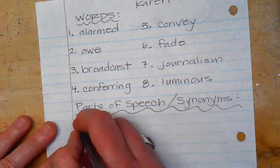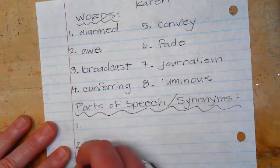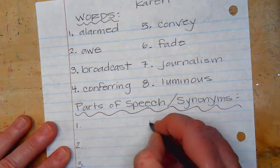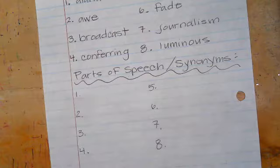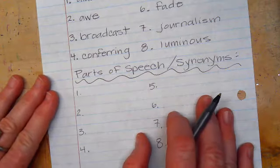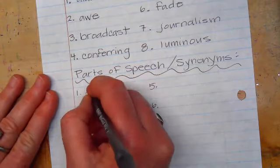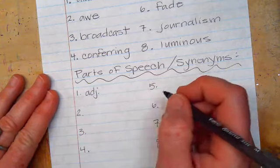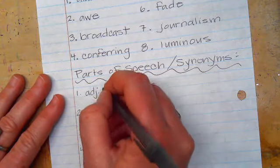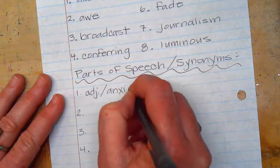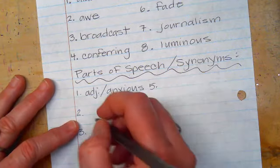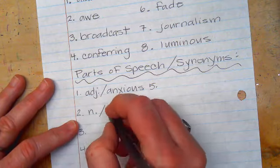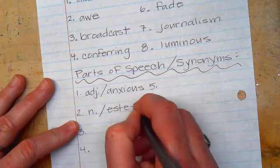So we're going to call this parts of speech and synonyms. So that's our next part. And there's going to be one, two, three, four, five, six, seven, eight. Okay. So part of speech on alarmed is an adjective. So I'm writing ADJ, and anxious is the synonym. Part of speech on awe is noun, and my synonym is esteem.